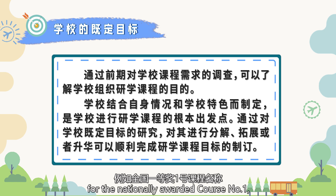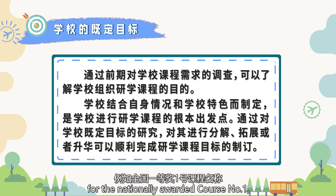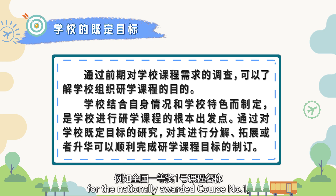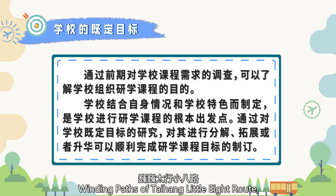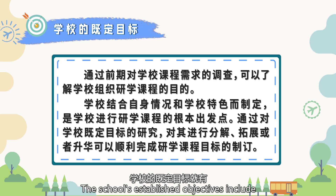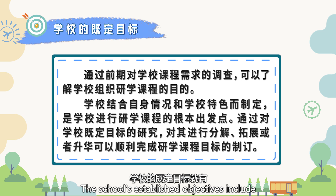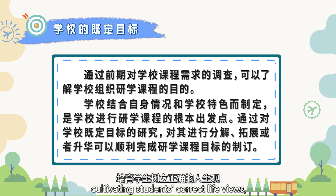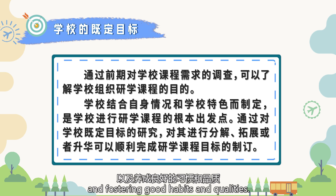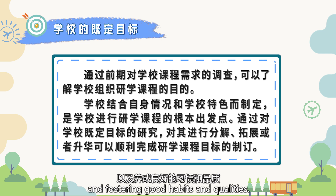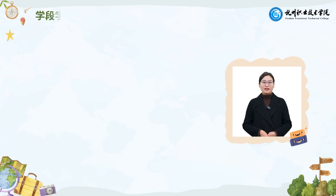For example, for the nationally awarded course, 'Winding Path of Taihang Little 8 Route,' the school's established objectives include cultivating students' correct life views, positive work spirits, and fostering good habits and qualities.